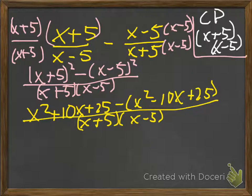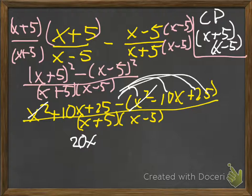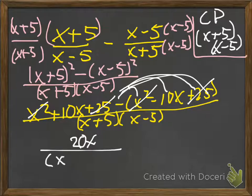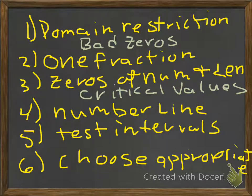I want to simplify the numerator — I'm going to leave the denominator factored. When I simplify the numerator, the x squared terms cancel, I get a minus x squared. Then I have a plus 10x, so that gives me 20x. The minus 25 and the plus 25 cancel — those are additive inverses. So I now have one fraction: 20x over x plus 5 times x minus 5. That's step 2 complete.